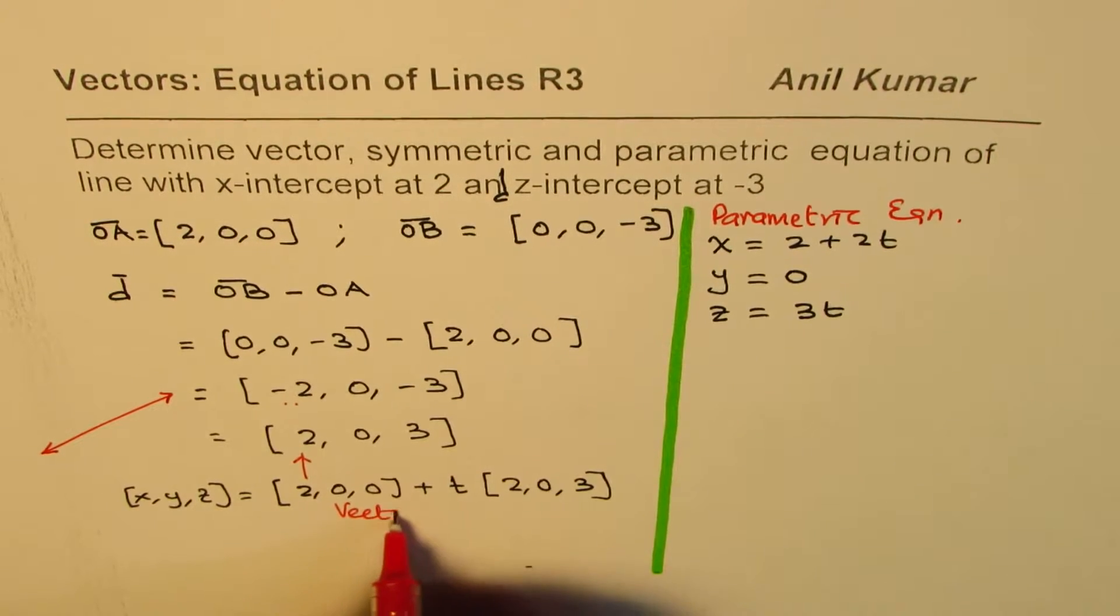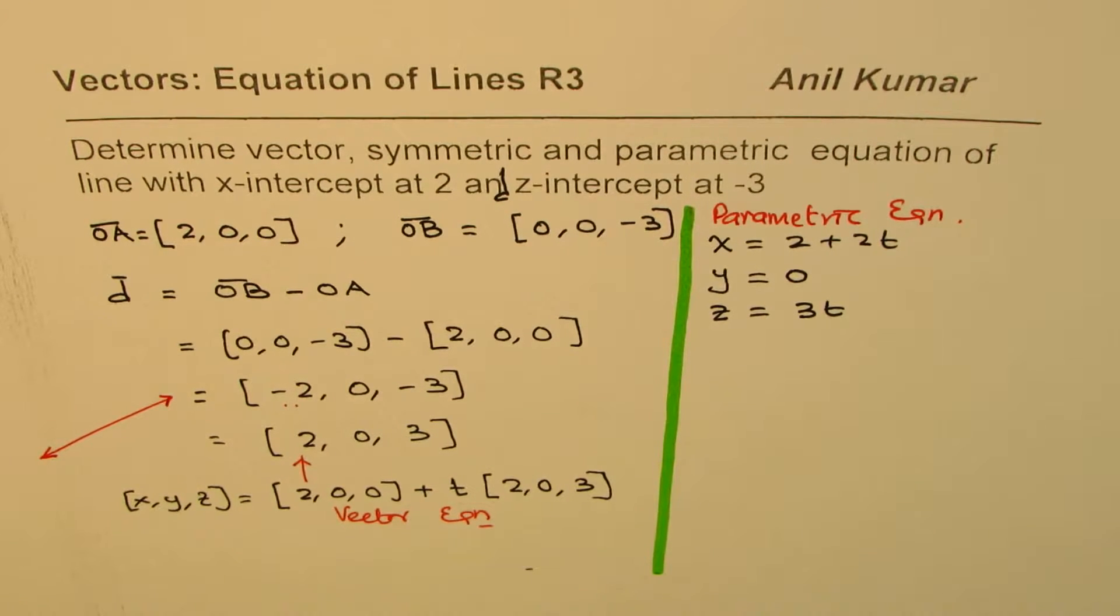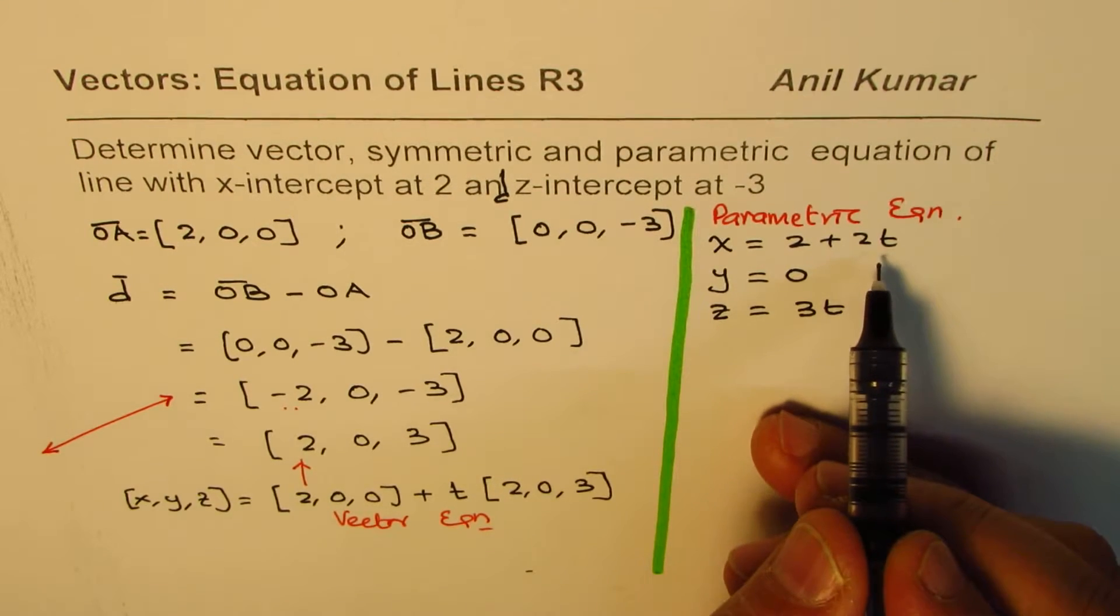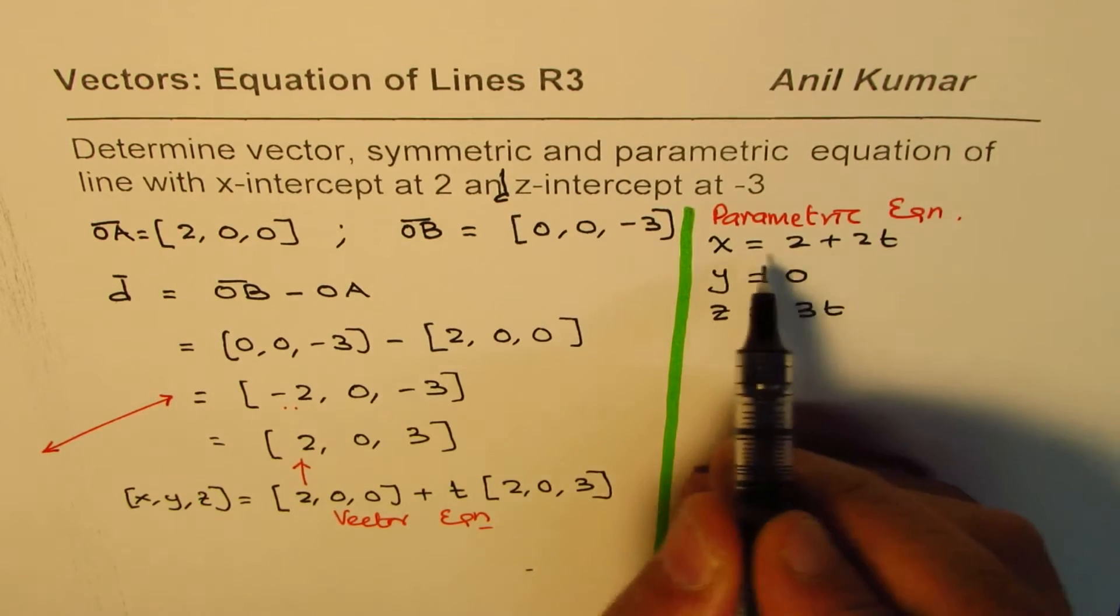This one is vector equation. Okay. Now, we can write the symmetric equation from here. To write symmetric, we have to isolate this t. So, working with the first equation,